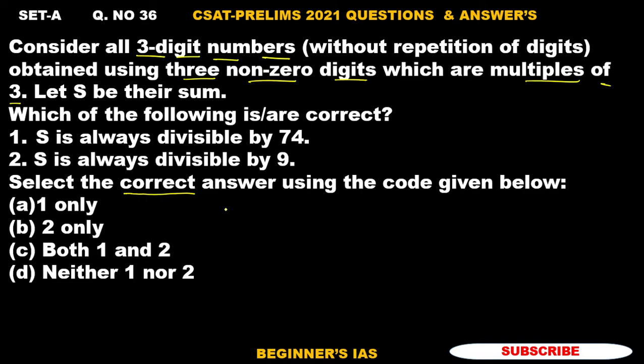With 0 to 9 we can form any number of numerals, either three digit or four digit, whatever. So here the first thing by the statement we need to identify the multiple of three. The multiples of three are 3, 6, 9.